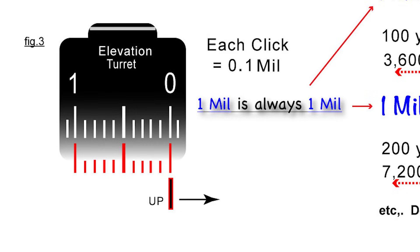And so remember, one mil is always one mil when we're talking about a mil. So each click on my turret, each click is 0.1 mil.